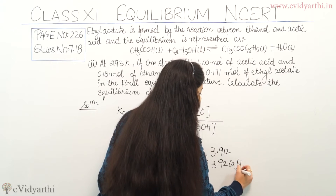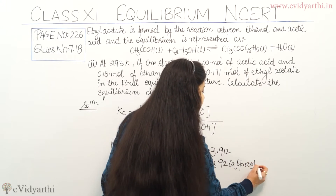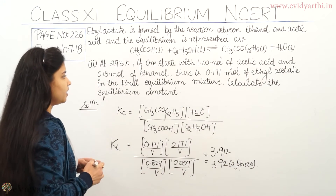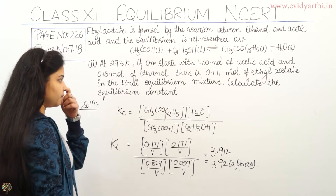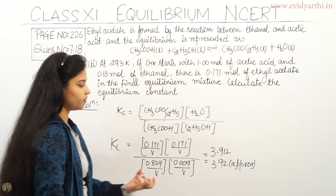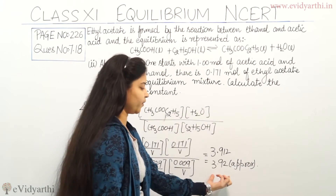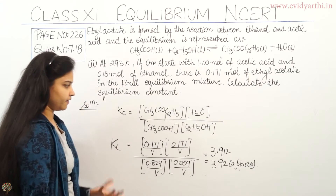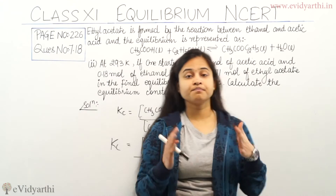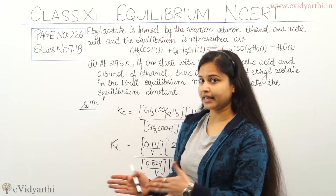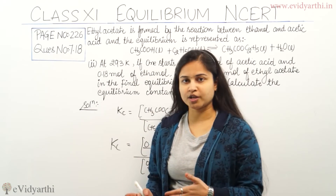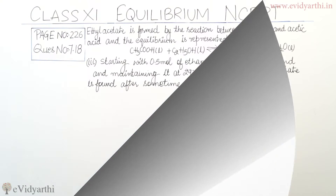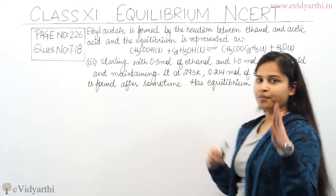Hence, the equilibrium constant Kc value is approximately 3.92. That was all about the second part of this question. Now we are moving on to the third part.